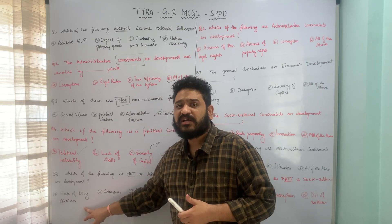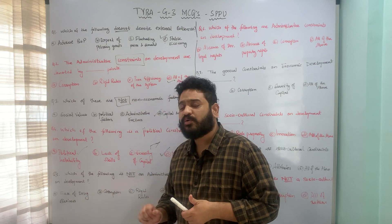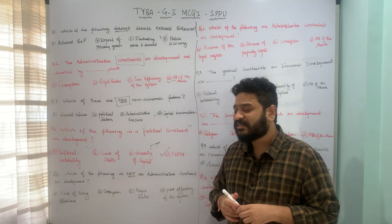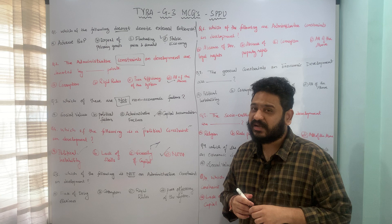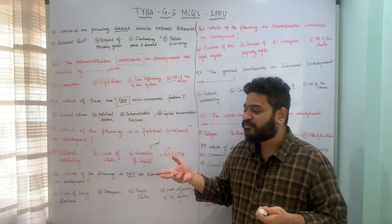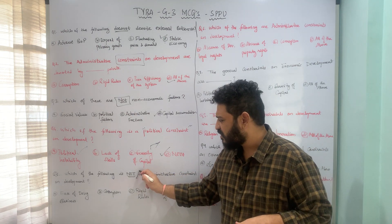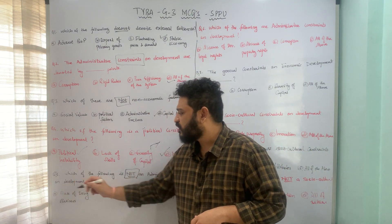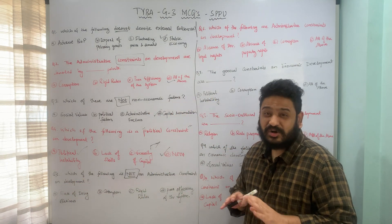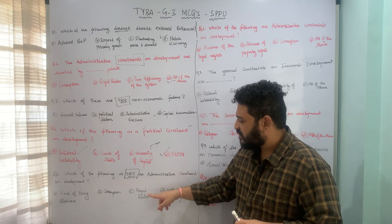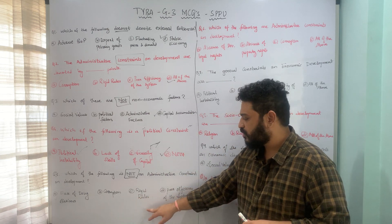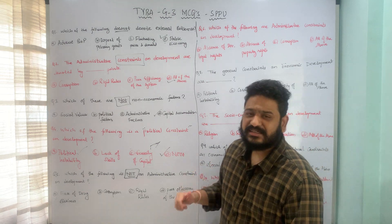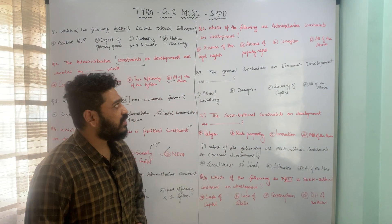Ease of doing business is NOT a constraint — it is actually good for economic development. If it were 'problems associated with doing business' or a 'tedious process in doing business,' then it would be an administrative constraint. Since we are looking for what is NOT an administrative constraint, option A — ease of doing business — is the correct answer.